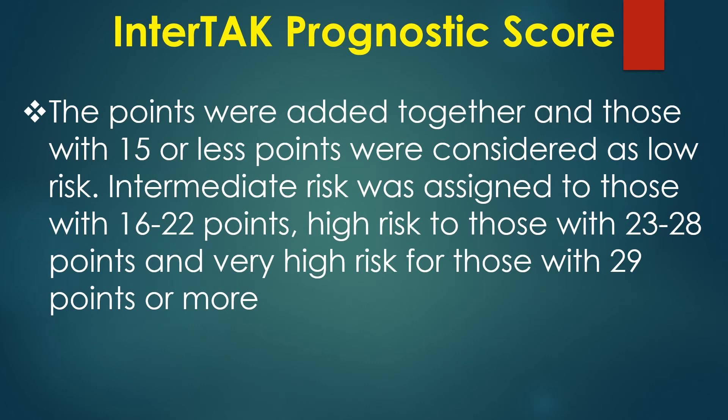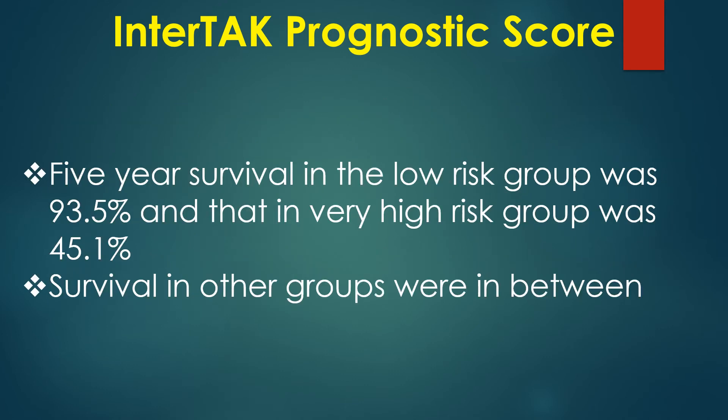Points are added together and classified as follows: 15 or less points — low risk; 16 to 22 points — intermediate risk; 23 to 28 points — high risk; 29 points or more — very high risk. Five-year survival in the low risk group was 93.5% and in the very high risk group was 45.1%, with survival in the other groups falling in between.